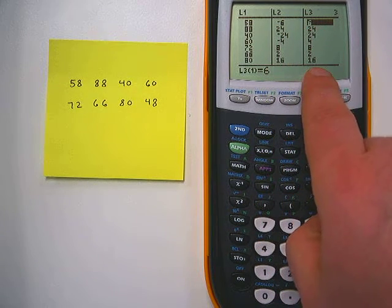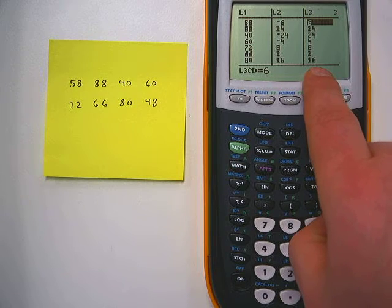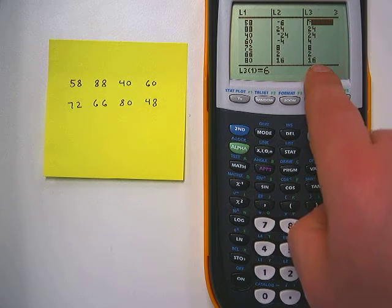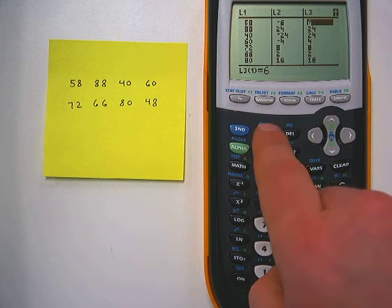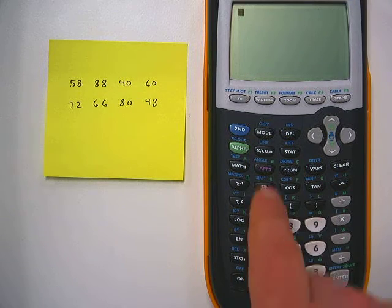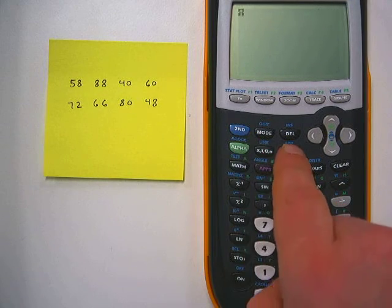So now we have the absolute deviation list right there but we want the mean of that. So in order to find the average of this we're going to exit to the home screen by hitting 2nd quit.